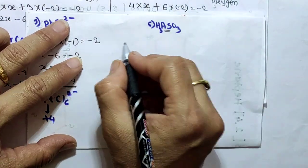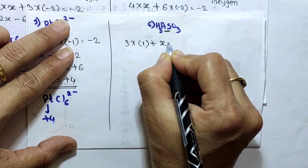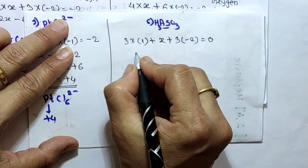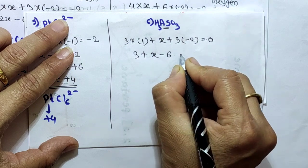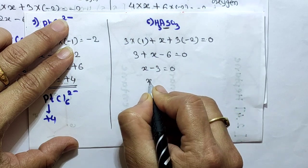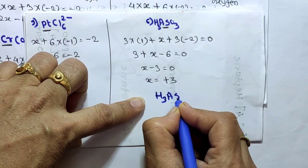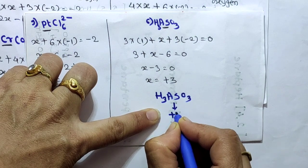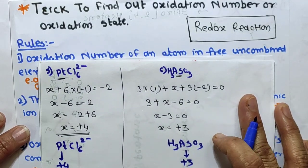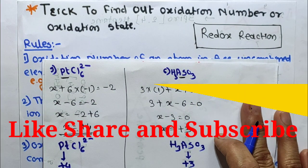Next example: H3AsO3. Find the oxidation state of arsenic. We write: 3×(+1) + x + 3×(-2) = 0. That is 3 + x - 6 = 0, so x - 3 = 0, therefore x = +3. So arsenic has oxidation state +3 in H3AsO3. In this way we can easily find the oxidation state or oxidation number of polyatomic ions. If you like this video, please like, share, and subscribe to my YouTube channel. Thank you.